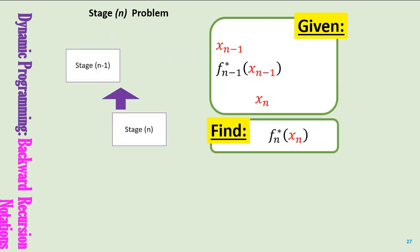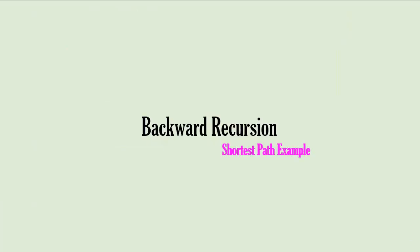The last stage problem solved in backward recursion is stage n. So in backward recursion, you start from stage 1, followed by stage 2, and so on until you solve stage n. Stage n problem: given xn and x(n−1) and the information of f(n−1) star, find fn star. Now let us use these notations to solve the shortest path problem.